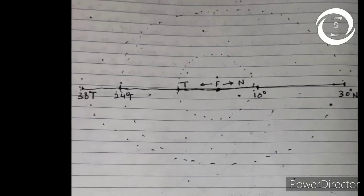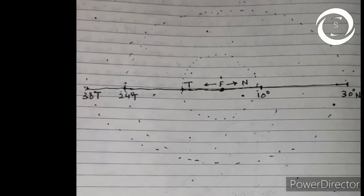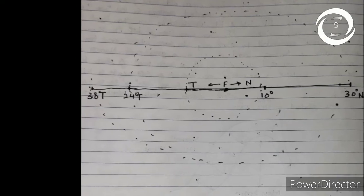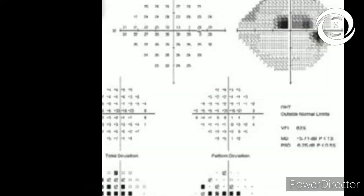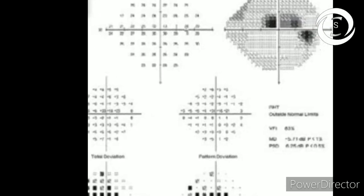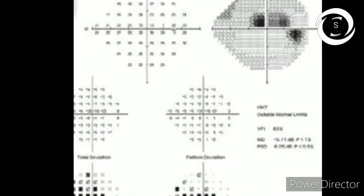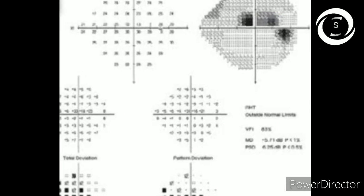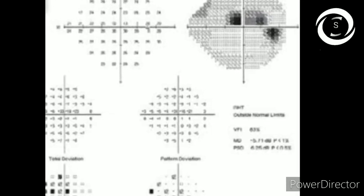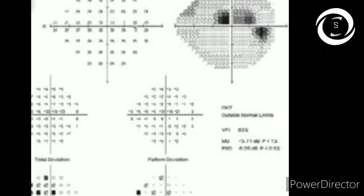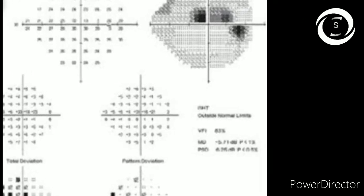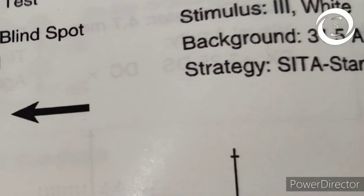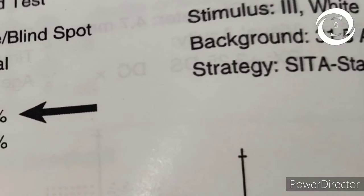24-2 means 24 degree temporal area is tested to 30 degree nasally. 2 describes the pattern of the points tested. 10-2 is used to assess a central area of radius 10 degrees. It becomes significant in advanced glaucoma when there is split fixation and foveal lesions. 24-2 and 30-2 are used for detecting and monitoring glaucoma, as well as they can easily pick neurological lesions.